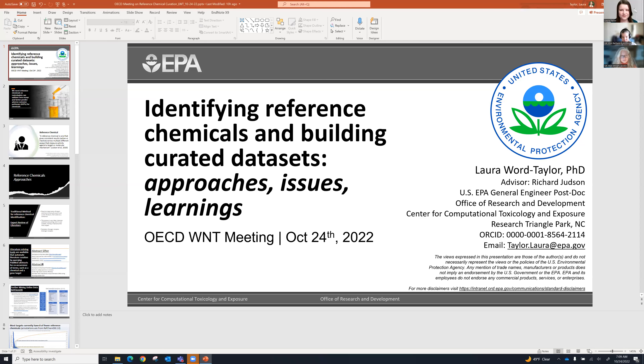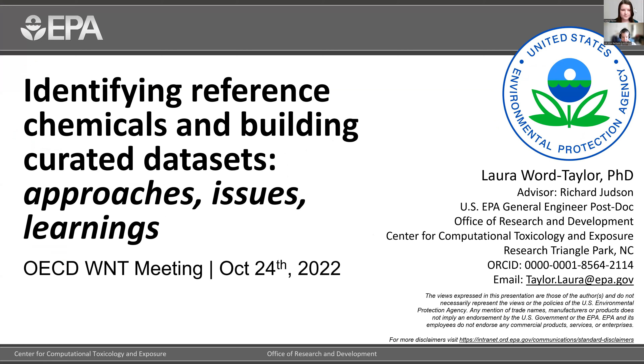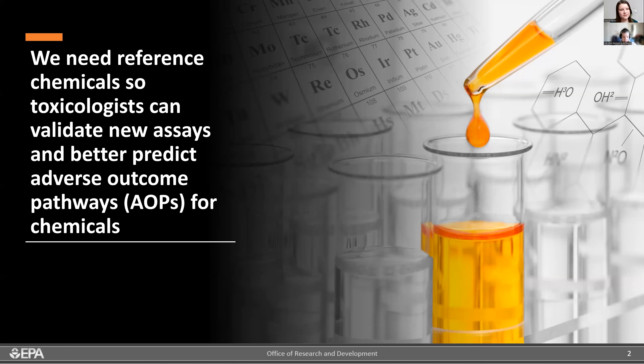Hello everybody. I'm excited to tell you more about the work we're doing at the EPA on refining reference chemicals and building curated datasets. Reference chemicals are important so that we can validate new assays and better predict adverse outcome pathways for existing and new chemicals. A reference chemical is one that gives consistent results of being active or inactive across multiple different assays that measure activity against a target or molecular mechanism. A classic example would be BPA impacting estrogen receptor.